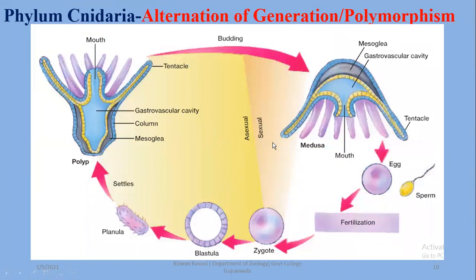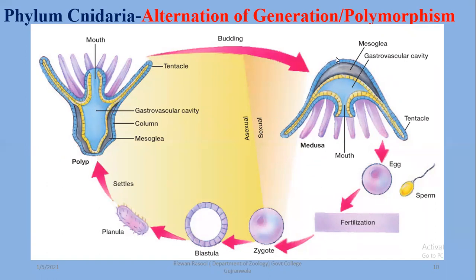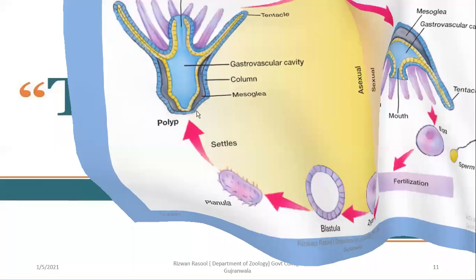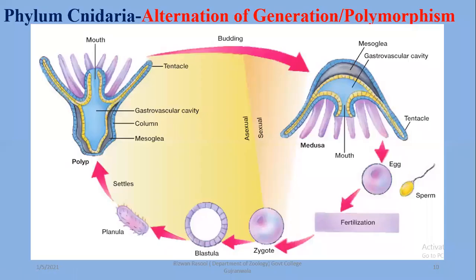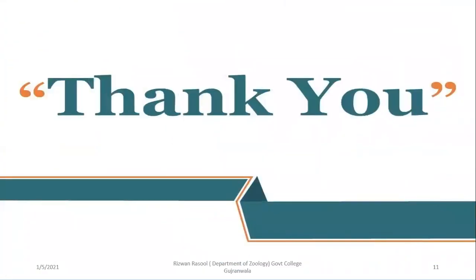This describes their life cycle. Some individuals exist only at the polyp stage. Some individuals show both stages — polyp and medusa — in their life cycle, and that is called the alternation of generation. The existence of an individual in more than one form is also known as polymorphism. That was a brief overview of phylum Cnidaria. In the next video, we will discuss it further. Thank you for watching.